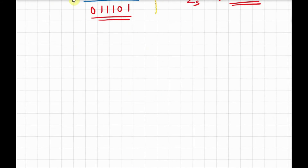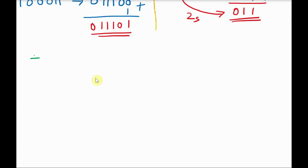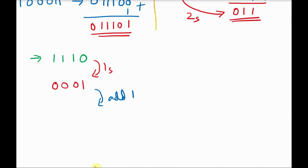We will see one more example. Find the 2's complement of the number 1, 1, 1, 0. First find the 1's complement: 1's complement of 1, 1, 1, 0 is 0, 0, 0, 1. Now to find the 2's complement, we have to add 1. 1 plus 1 is sum 0 carry 1, and 1 plus 0 is 1, giving 0, 0, 1, 0. So this is the 2's complement of 1, 1, 1, 0.